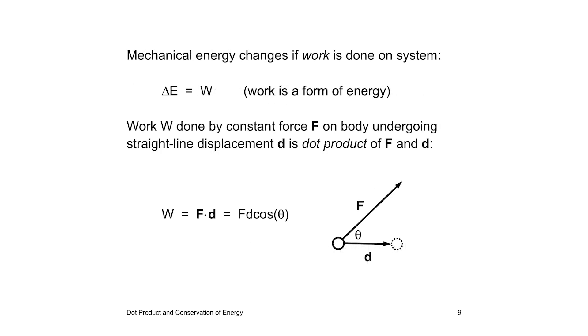The energy of a mechanical system changes if work is done on the system. The change in energy equals the work, which is a form of energy. This is where the dot product enters the picture. The work done by a constant force for a straight line displacement is the dot product of the force and the displacement. Why is the work defined in this way? The answer is that only this definition leads to our expression of energy conservation. We are now ready for the demonstrations.